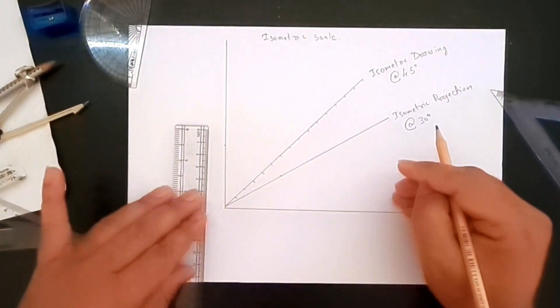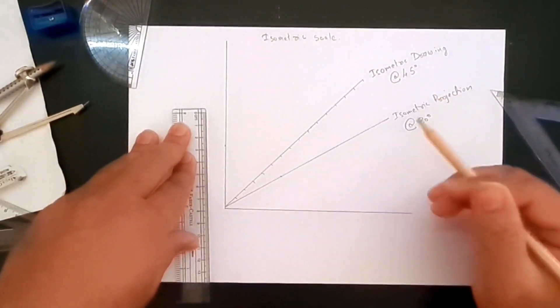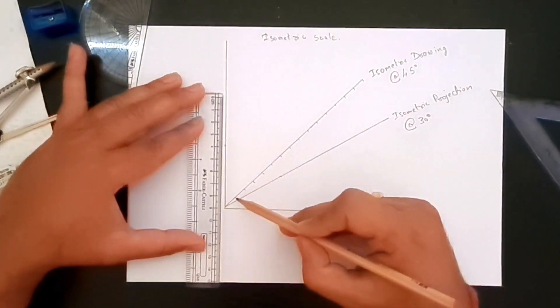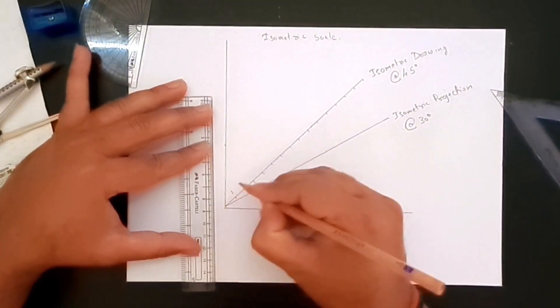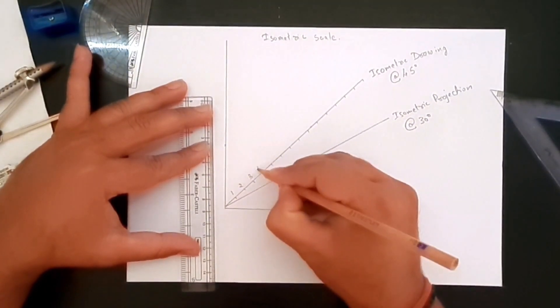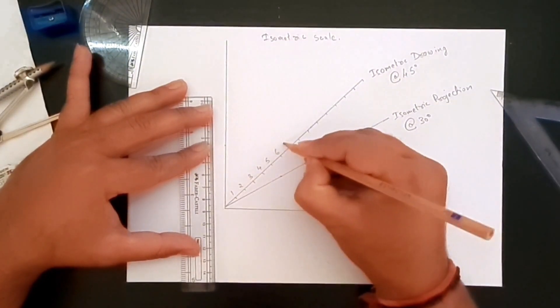Now to draw this scale, what we need to do is project all of these points. Let's give them numbers 1, 2, 3, 4, 5, 6, 7, 8, 9, 10, 11, 12, 13, 14, and 15.